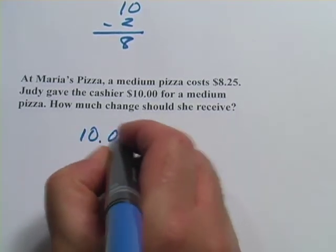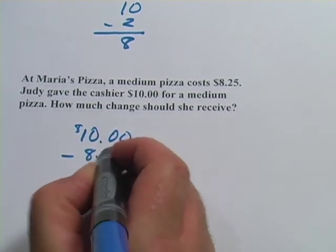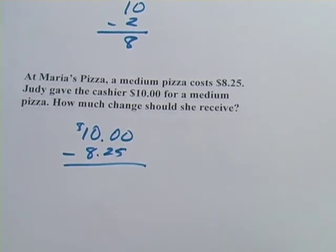So you start with $10, and you want to take away the cost of the pizza to figure out how much change you're going to get back. This is a good thing to know how to do.